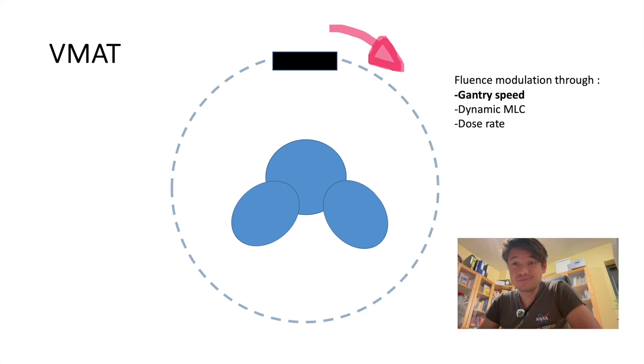In VMAT, fluence modulation is achieved through three main parameters. The first is the gantry speed. The machine can rotate faster or slower at specific points along its circular path around the patient, depending on the dose needed in this area.